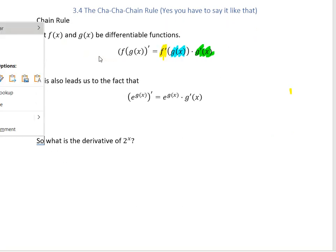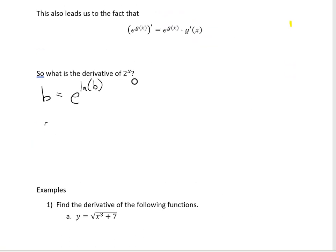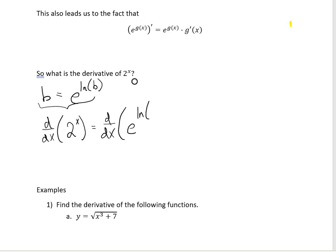So let's go ahead and use this. We are going to use this fact to find out what the derivative of something like 2 to the x is. A little known fact is that if you have some number b, you can rewrite that as e to the natural log of b — those two things are the same. So let's say we want to take the derivative of 2 to the x. What I can do is rewrite 2 to the x as e to the natural log of 2 to the x. Now, using properties of logs, if I have the log of something raised to an exponent, I can take that exponent and drop it out in front and multiply by it.